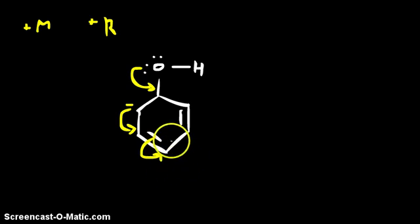Then this negative charge comes here from the pi bond, and then this pi bond comes here, comes here, and this thing gets a negative charge. So overall this whole structure has changed and it has become resonance stabilized. This is denoted by plus M or plus R.